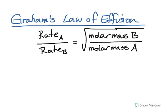And Graham, Thomas Graham, actually theorized that the rate of effusion of A divided by the rate of effusion of B is equal to the inverse square root of their molar masses.